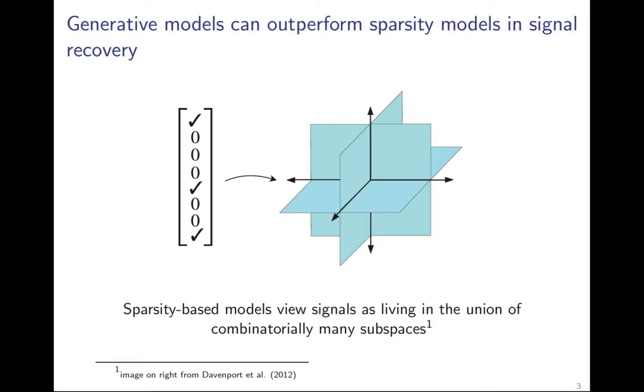Sparsity-based models, on the other hand, view signals as living in the union of combinatorially many subspaces. This is arguably a more complicated mathematical structure than the range of a generative model, and one that does not tightly characterize the types of signals that we're interested in, as for example some sparse signals may not be natural images.